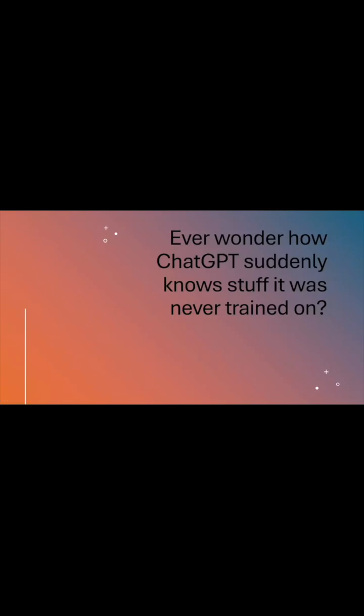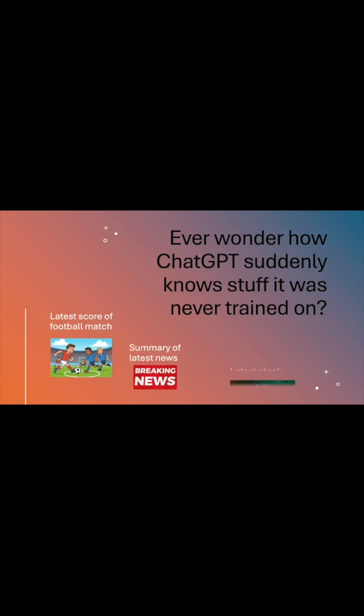Ever wondered how ChatGPT suddenly knows the stuff it was never trained on? For example, telling you the latest score of a football match, summarizing the breaking news, or the latest price of a stock. So when that LLM was being trained, it never had that information because the event had not occurred. But it still knows the answer. Let us see how.